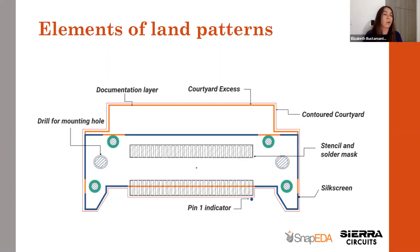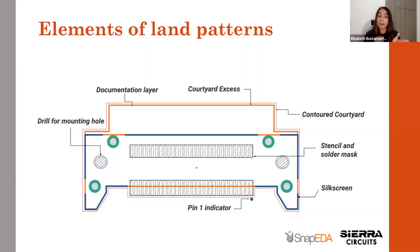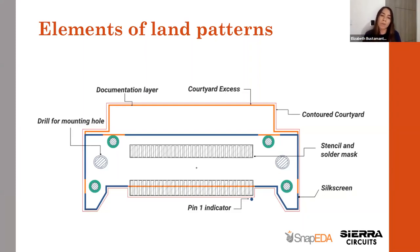Then we have the courtyard. When talking about courtyard, there are two terms: the contour courtyard and the courtyard excess. The contour courtyard provides the minimum electrical and mechanical clearance around the combined component body, the land pattern, and your land pattern boundaries. The courtyard excess is the clearance — the area between the rectangle containing the land pattern and component, and the outer boundary of the courtyard.